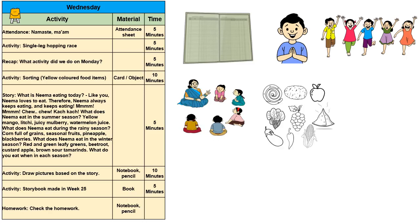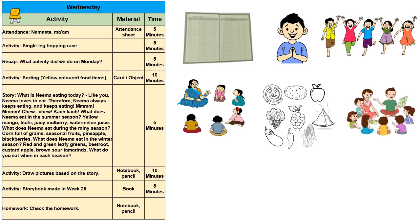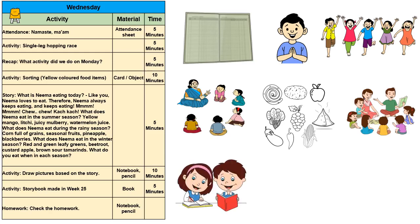Now teach children to classify or sort — for example, separate the yellow colored food items. Next, tell the children the story 'What is Nima eating today?' After the story, ask how did you like the story, and also ask simple and difficult questions based on the story.